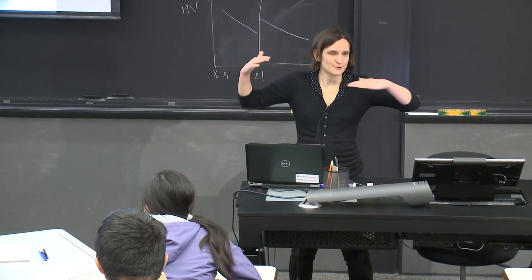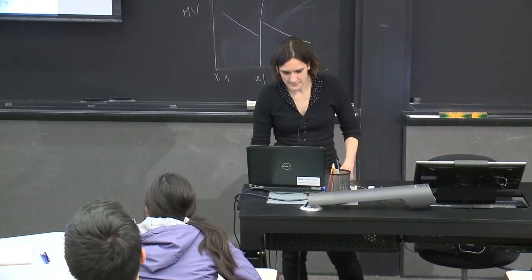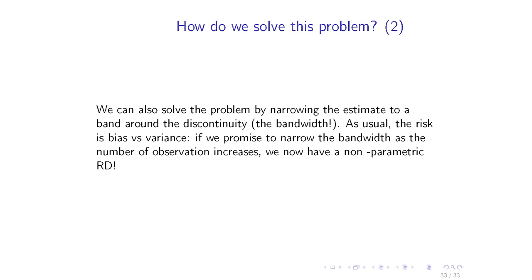The first way to address nonlinearity concerns is imposing a polynomial. The second is narrowing the estimate to a band around the discontinuity — that's the bandwidth. Parametric regression discontinuity uses your full data with a polynomial form on both sides. Non-parametric RD reduces the bandwidth, then typically estimates a local linear regression on either side, reducing the bandwidth as you have more observations.